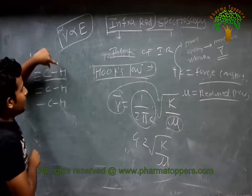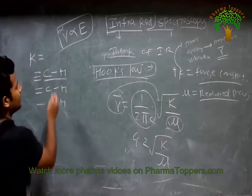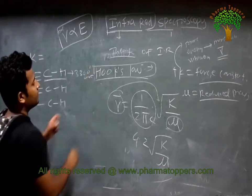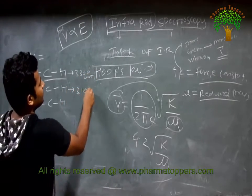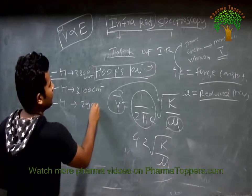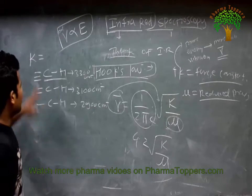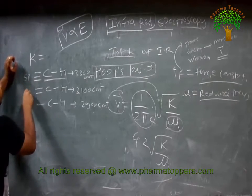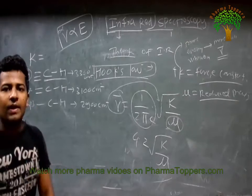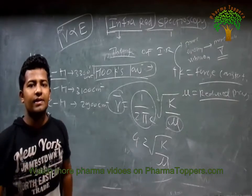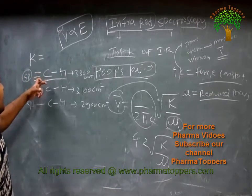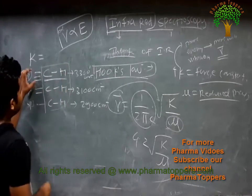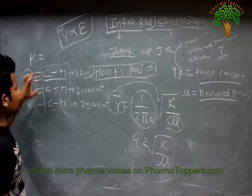Now looking at C-H bonds: for C≡C-H (SP hybridized), the wavenumber is around 3300 cm⁻¹. For C=C-H (SP2 hybridized), it is around 3100 cm⁻¹. For C-C-H (SP3 hybridized), it is around 2900 cm⁻¹. This is because as S-orbital contribution increases with higher hybridization, the bond gets stronger and the wavenumber increases.